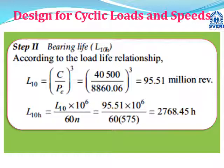The life has been calculated in million revolutions, but the problem asks for life in hours. Using the formula L10 = 60·N·L10H / 10^6, rearranging for L10H. Substituting L10 = 95.51 and N = 575, we get L10H = 2765.68 hours. To summarize: calculate n1, n2, n3 (rpm × elemental time), then pe, then L10, then L10 in hours.